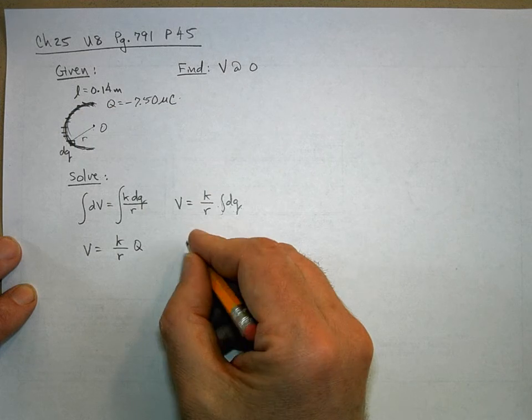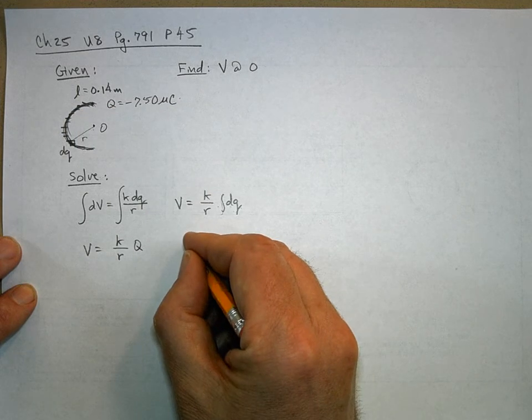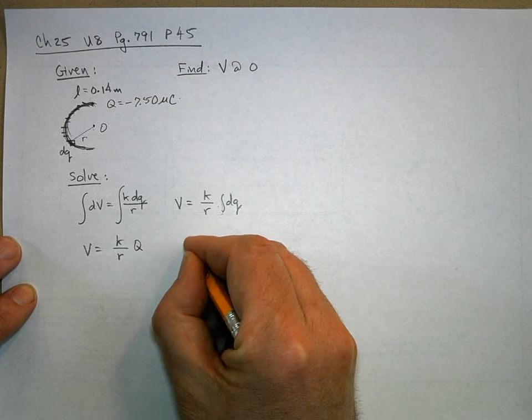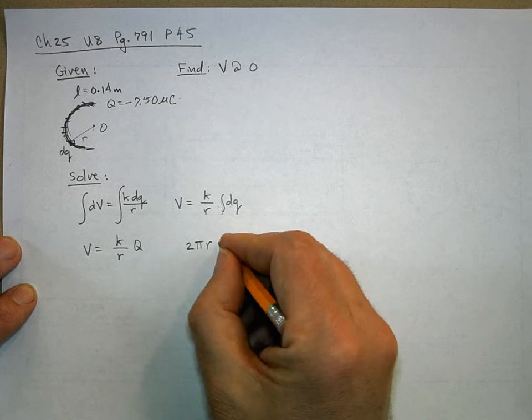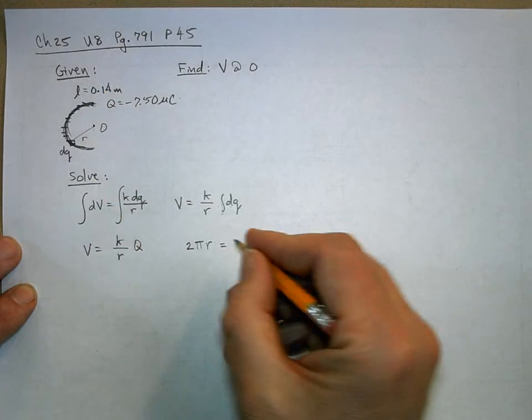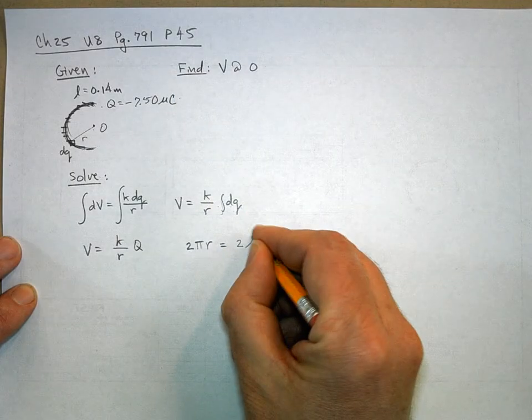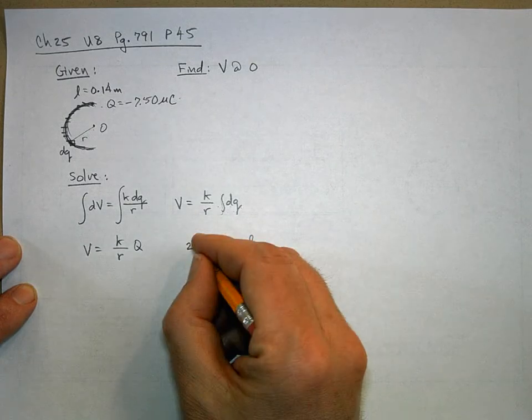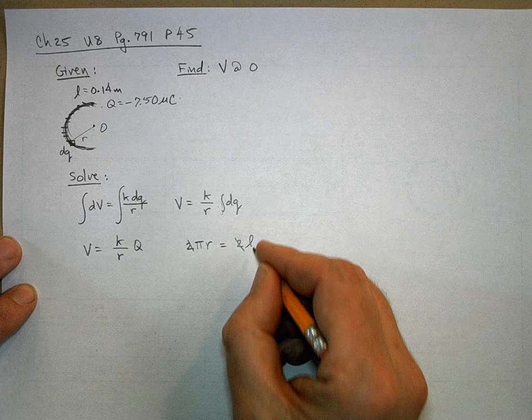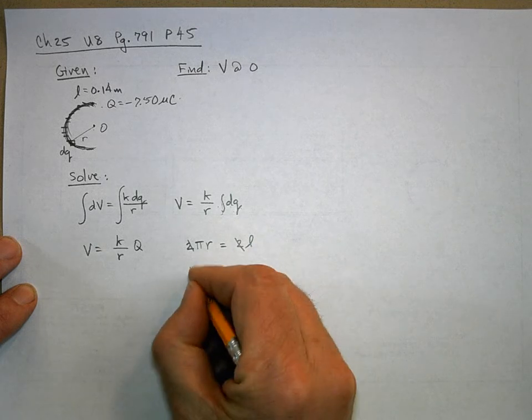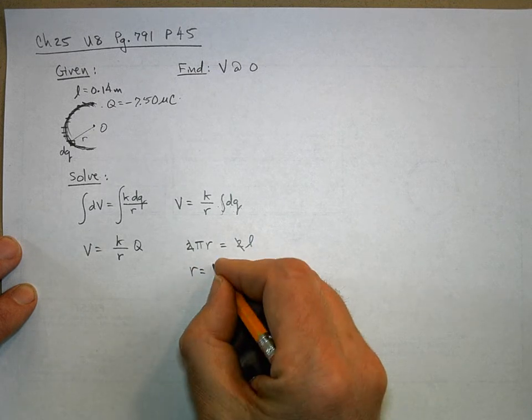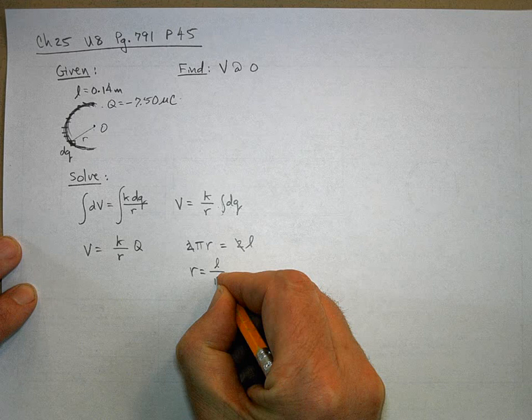A semicircle... well, a circle has a circumference of 2πR, but this is only a semicircle. So this length L, if you double L you would get the circumference of a circle. So the 2 goes away. And if I solve for R, R is equal to L over π.